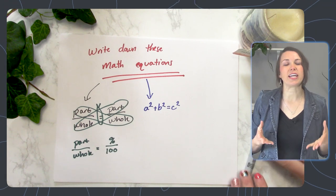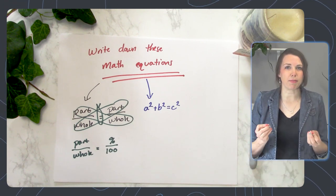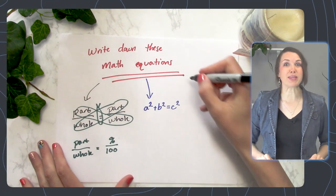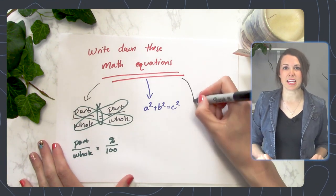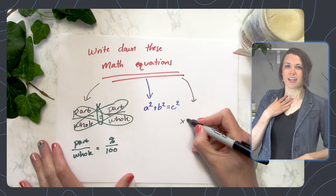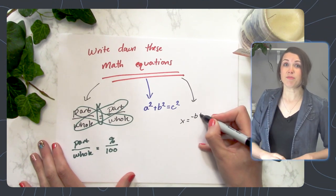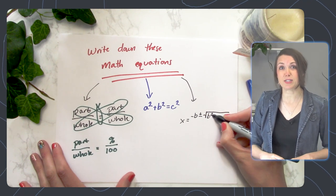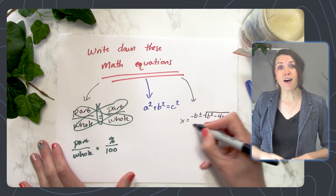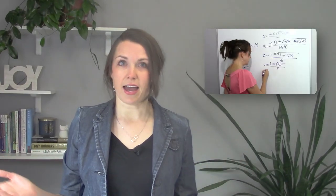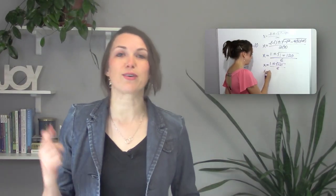The next one is a more advanced problem — the quadratic equation. The best way to memorize it is to actually sing it: x equals negative b plus or minus the square root of b squared minus 4ac, all over 2a. Did you recognize it? It was Pop Goes the Weasel. And again, I have a video that goes over it.